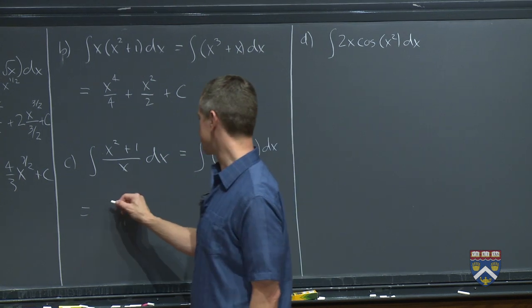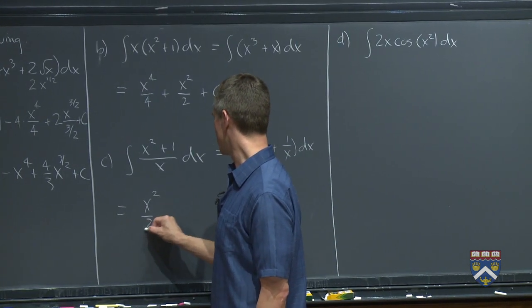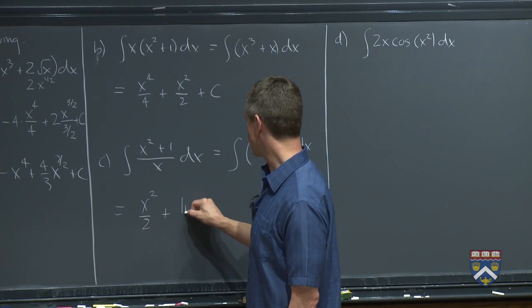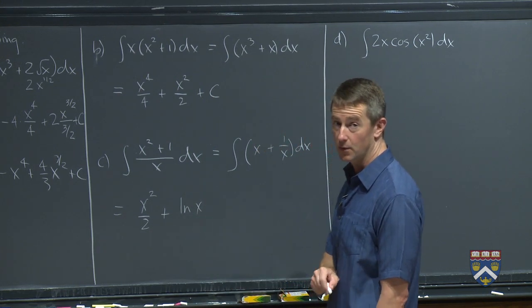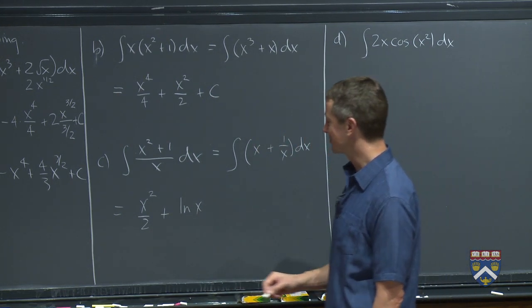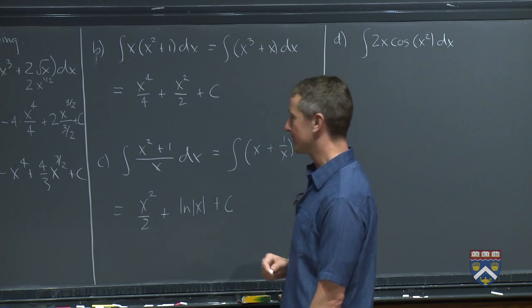And now the integral of x is still x squared over 2, the integral of 1 over x, ln of x. Don't forget the what? Don't forget those absolute value bars. And then don't forget the plus c at the end.